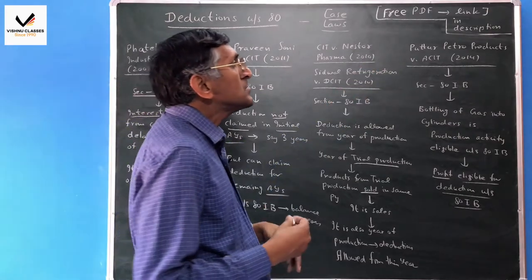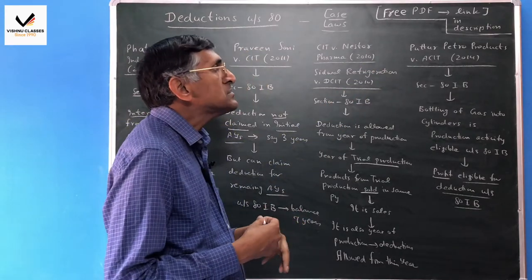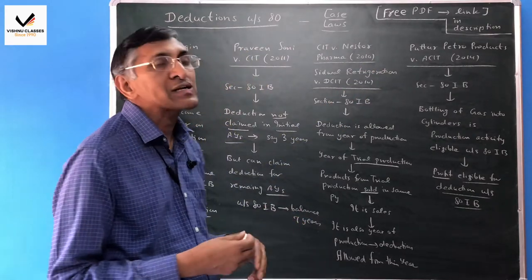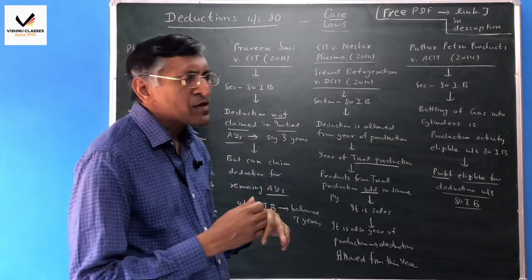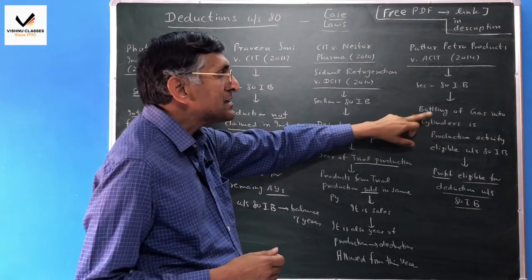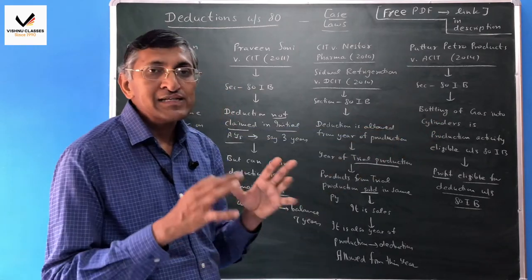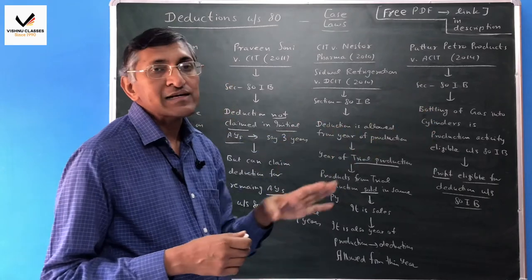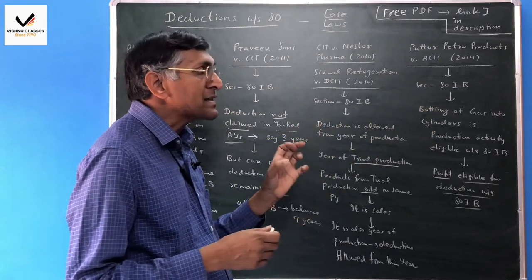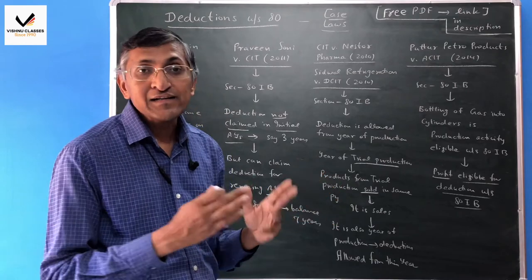Next is Proper Sector of Products versus ACIT. This is related to section 80IB. This is a gas company - they are bottling gas and filling it up. This bottling of gas into cylinders is a production activity and is eligible under section 80IB.